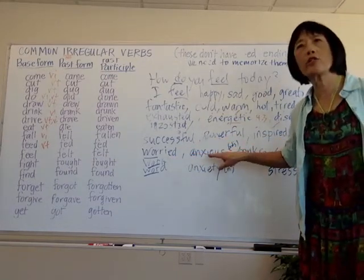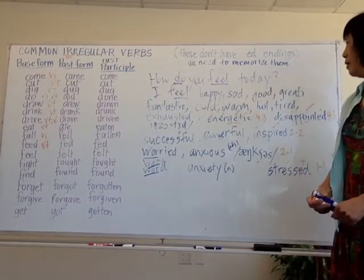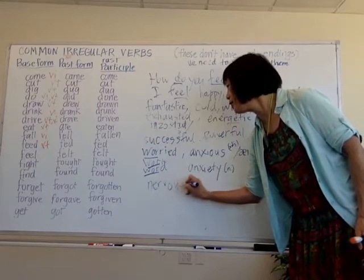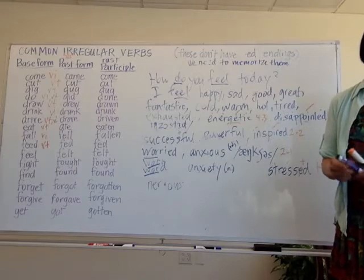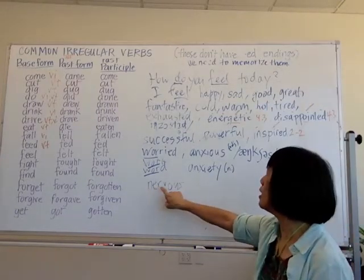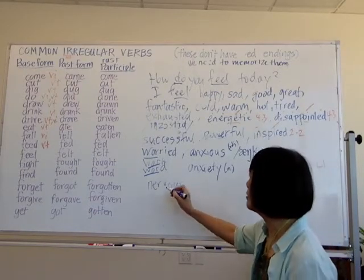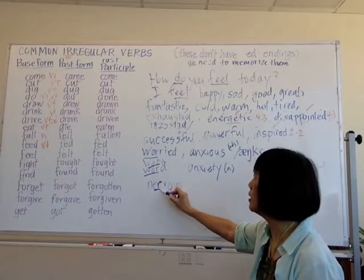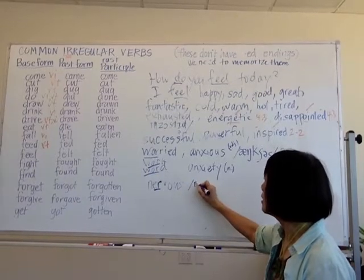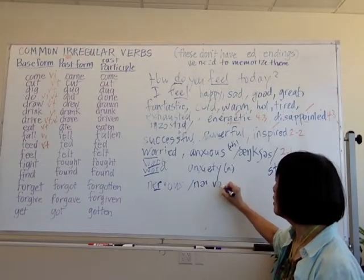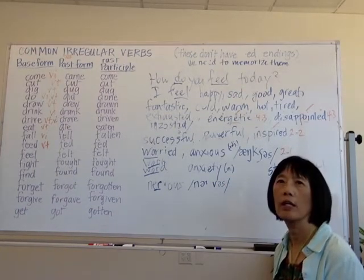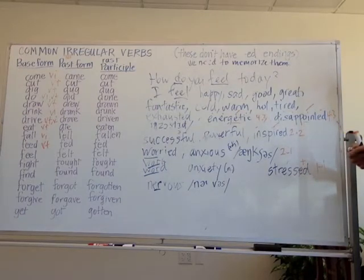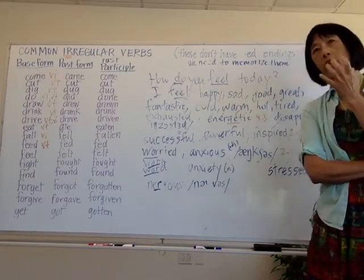Anxious is stronger than worried. Do you know the word 'nervous'? How do we pronounce it: nervous, N-E-R-V-O-U-S. The 'er' sound in 'nerve' is the same 'er' as in 'worry,' 'work,' and 'word.' They all have the same 'er' sound. Nervous is a very common word.